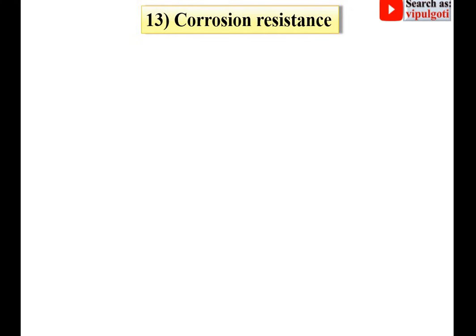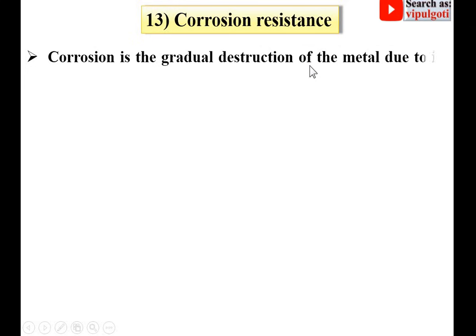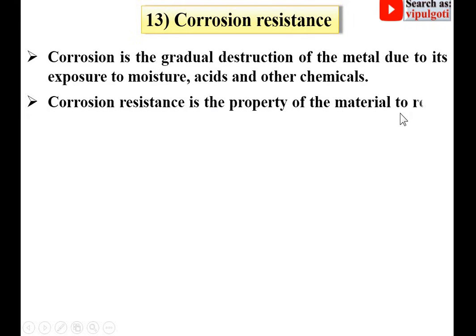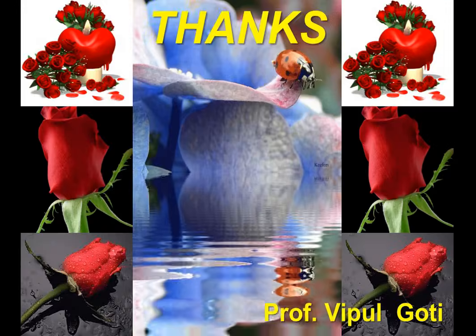The last property is corrosion resistance. Corrosion is the gradual destruction of metal due to its exposure to moisture, acids, and other chemicals. Corrosion resistance is the property of a material to resist corrosion. Thanks, dear friends — please press the like button to appreciate this video.